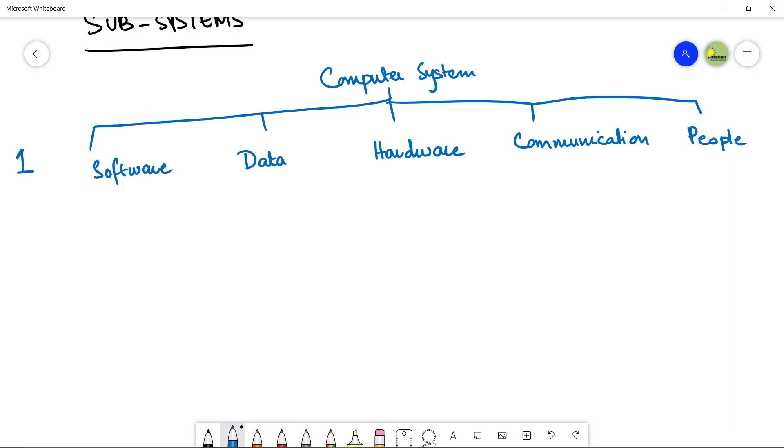Now, let's divide the subsystems into further smaller subsystems. So, if I talk about softwares, then I can have an application software.